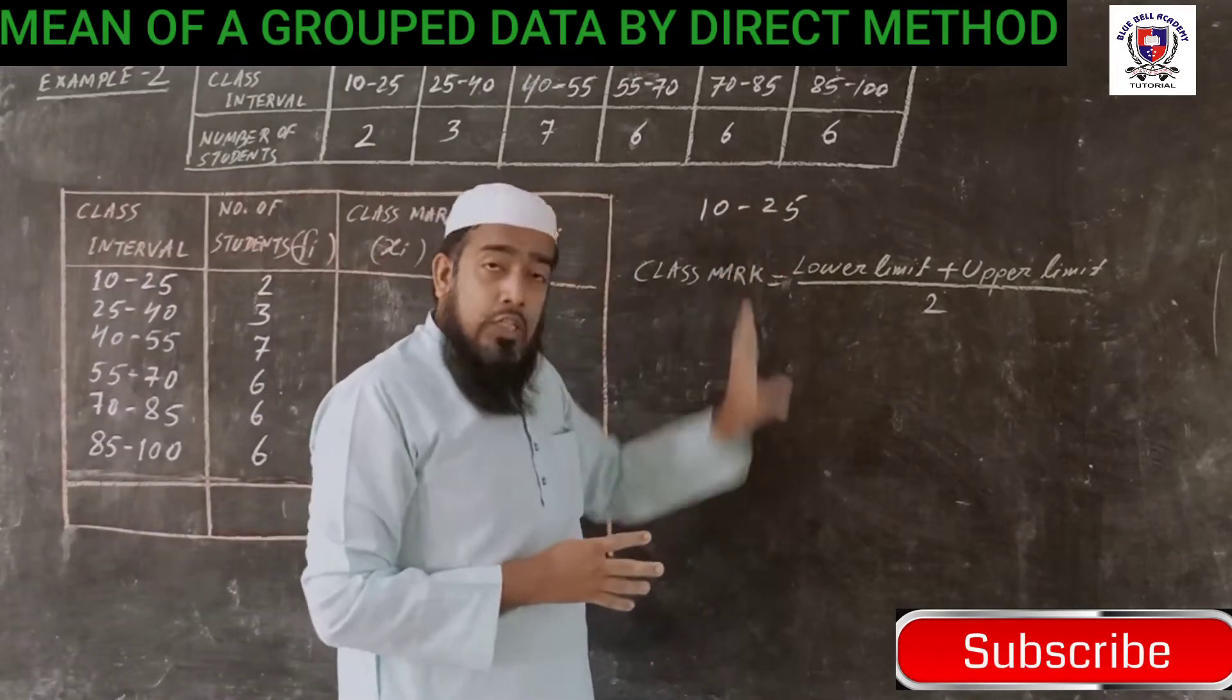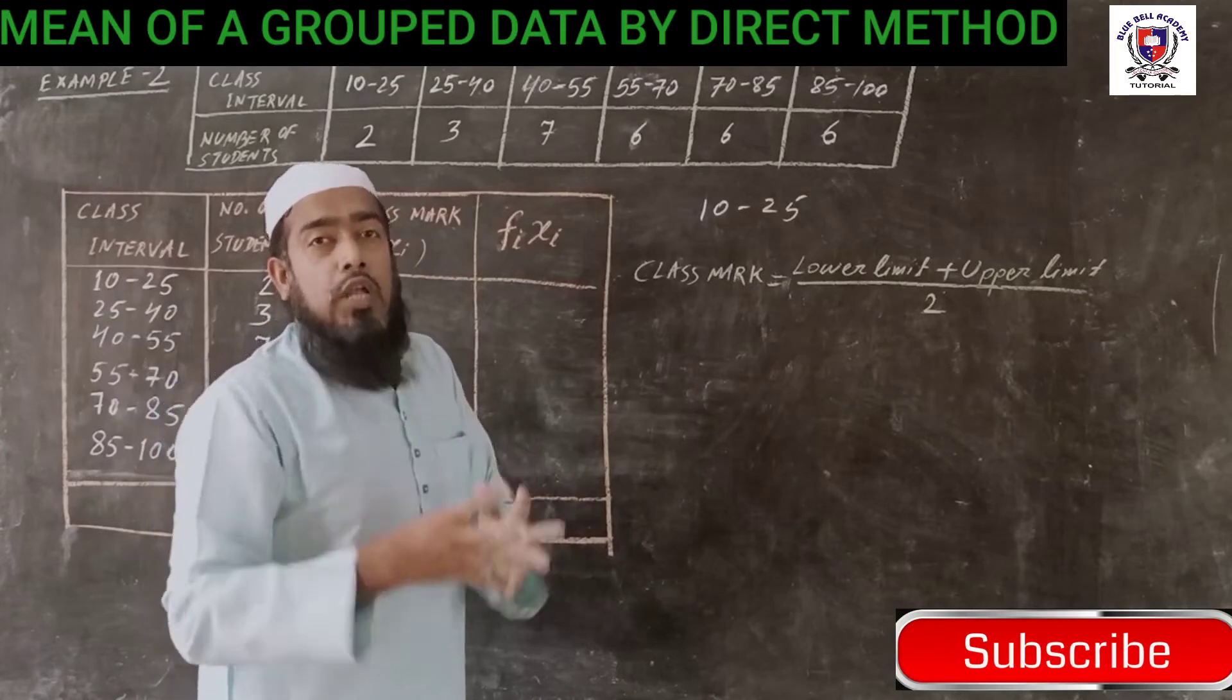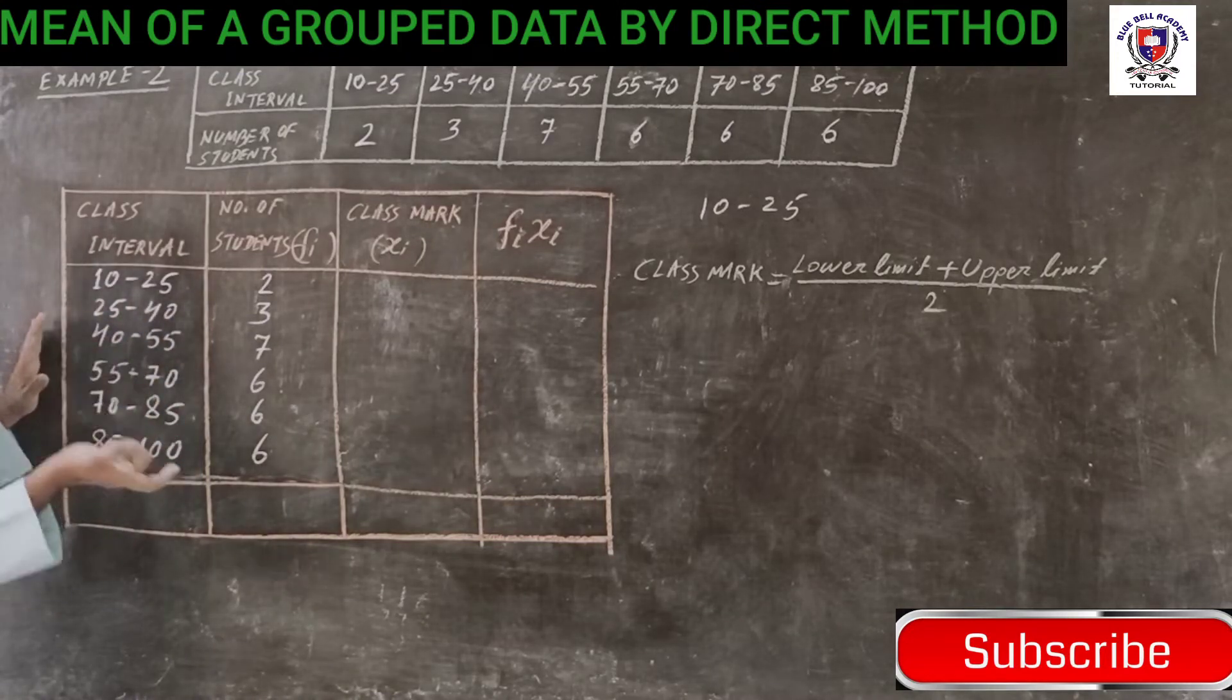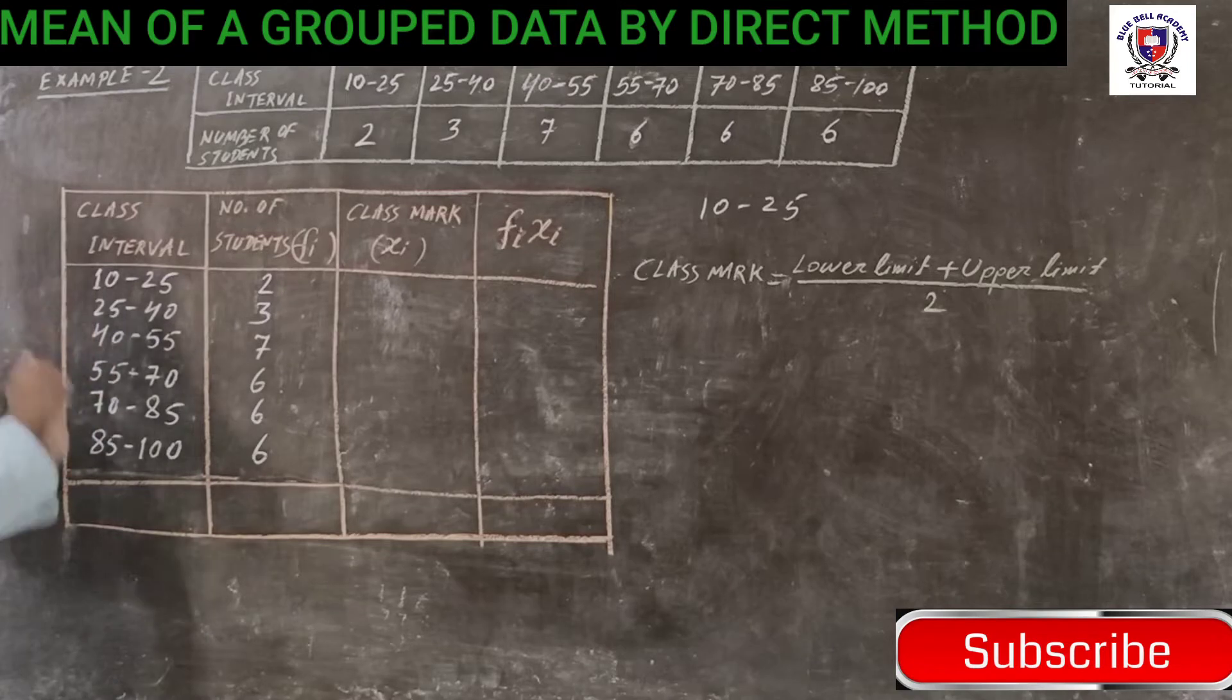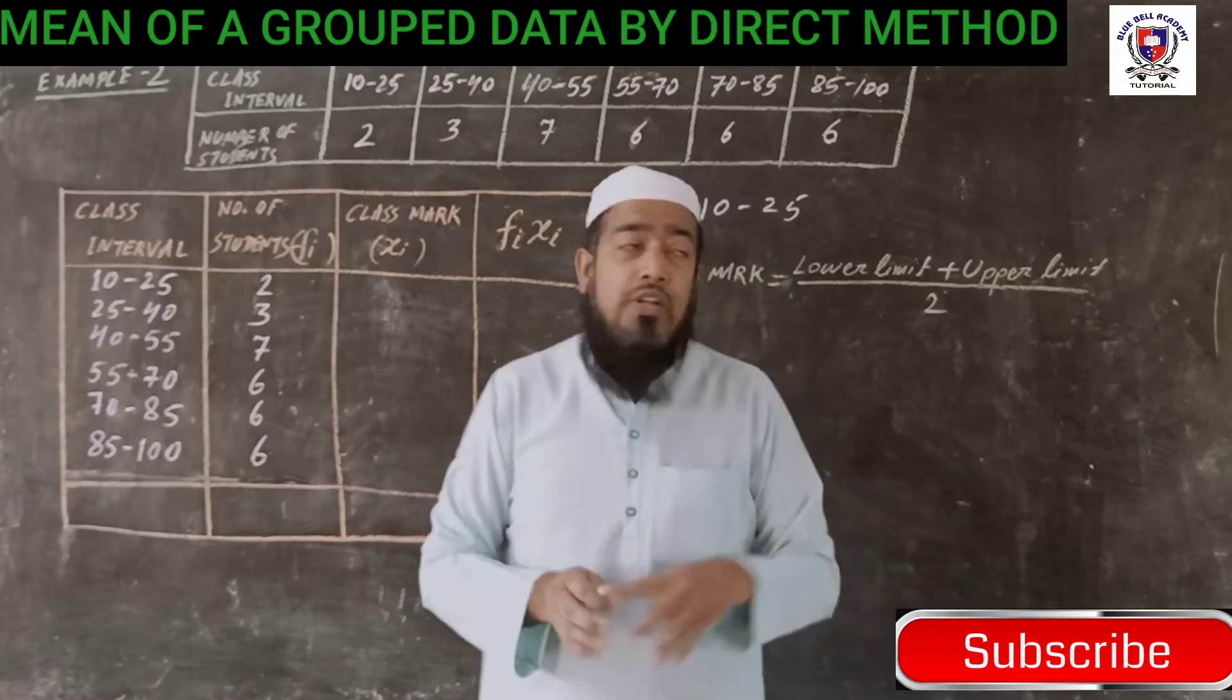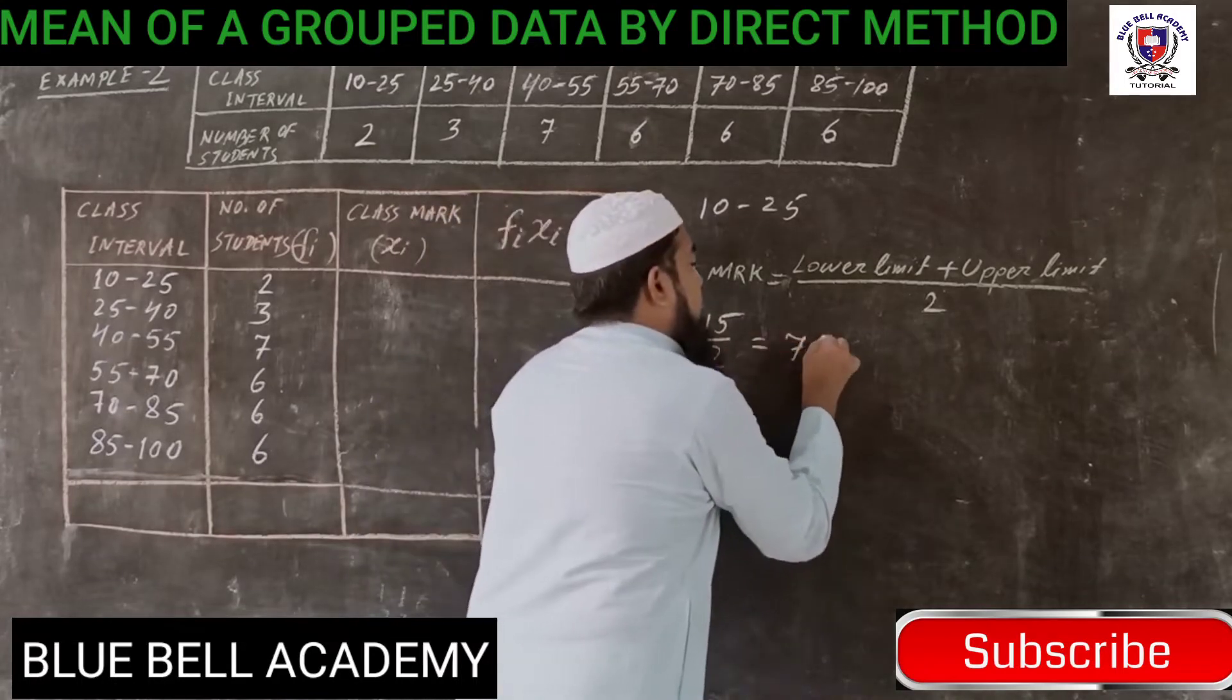But as per me, this is a very lengthy process. Today I will teach you how to find this class mark very easily without doing more calculation. If you observe all the class intervals, the difference is 15. How to know the difference? Subtract the lower limit from the upper limit: 25 minus 10 is 15, 40 minus 25 is 15. So the class size is 15. You take that 15, this is my method, it will be easier for you. 15 divided by 2 gives you 7.5.